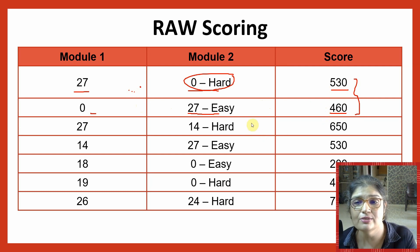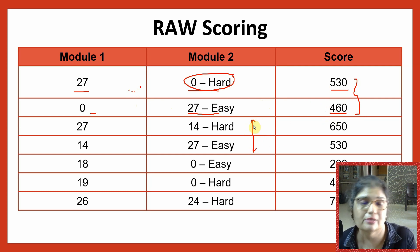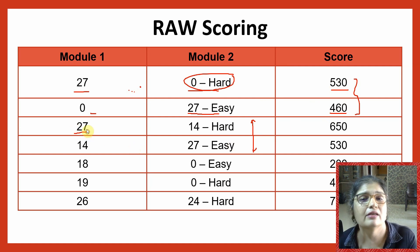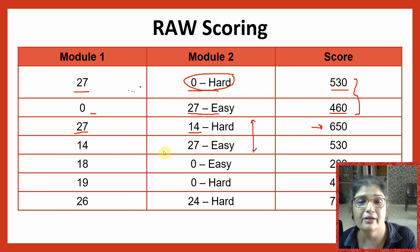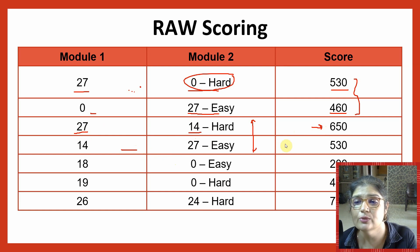If you look at these two rows, you get the same result: 27 correct in module one and 14 correct in module two is a score of 650. But if you do the vice versa, you get a score of only 530.